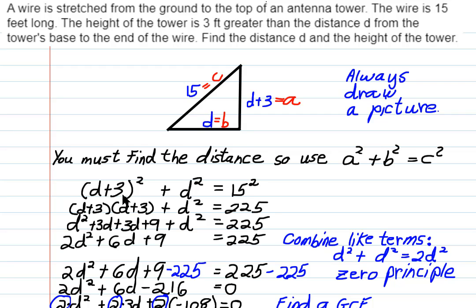You have the quantity d plus 3 squared. So that means you're going to have d plus 3 times d plus 3. We're going to multiply these together, then add in d squared. Meanwhile, 15 squared is 225. So here we're going to multiply these two binomials together. D times d is d squared. D times 3 is 3d. 3 times d is 3d. And 3 times 3 is 9. So we have d squared plus 3d plus 3d plus 9, plus d squared, which was already there, equals 225.